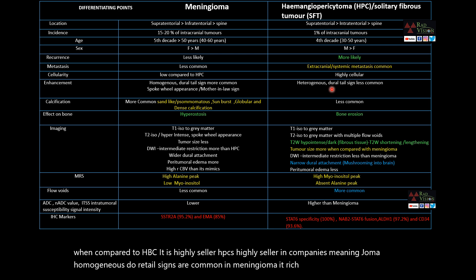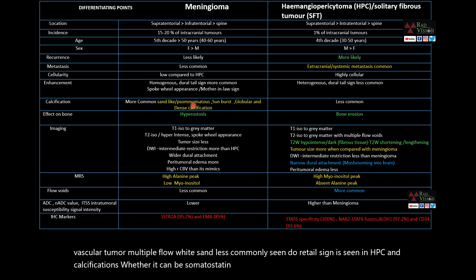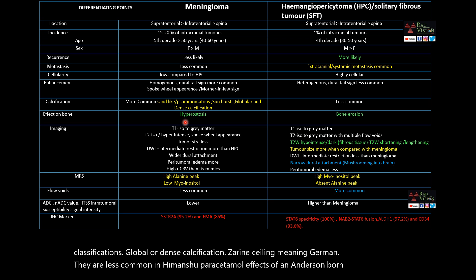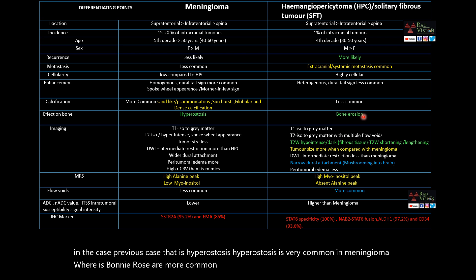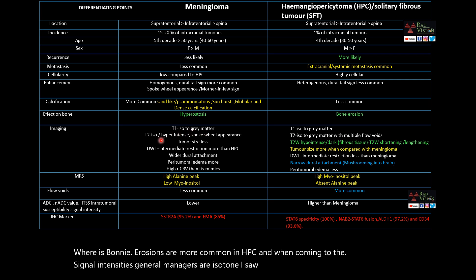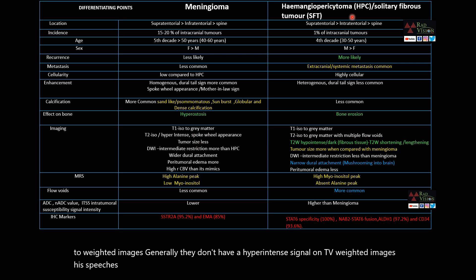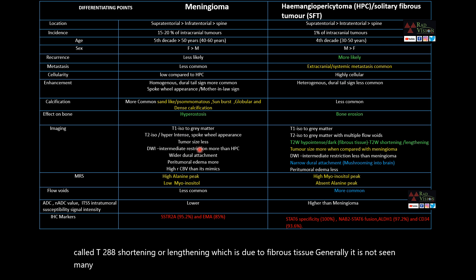Heterogeneous enhancement, vascular tumor features, and multiple flow voids are seen in HPC, where dural tail sign is less common. Hyperostosis is very common in meningioma, whereas bony erosions are more common in HPC. Generally, meningiomas are iso- to hyperintense on T2-weighted images. HPC has a classical hypointense signal on T2 due to T2 shortening from fibrous tissue — this is not seen in meningioma unless it is the fibrous or fibroblastic type.